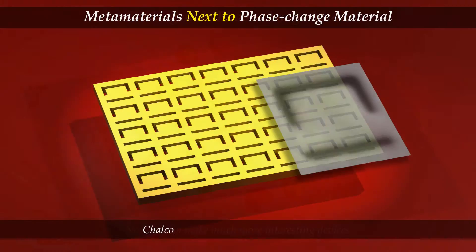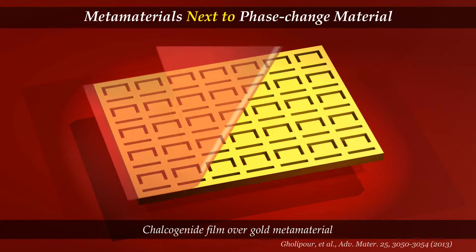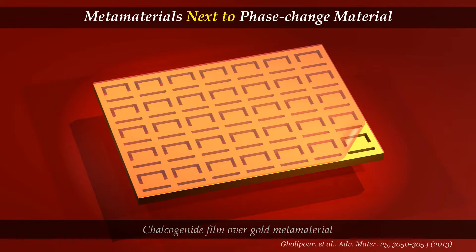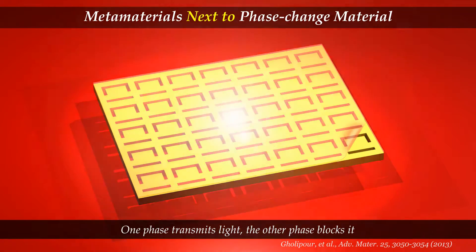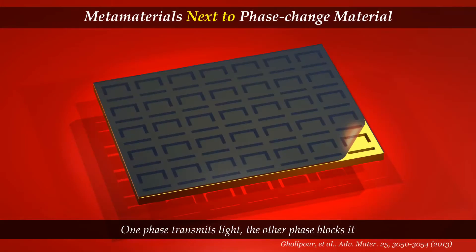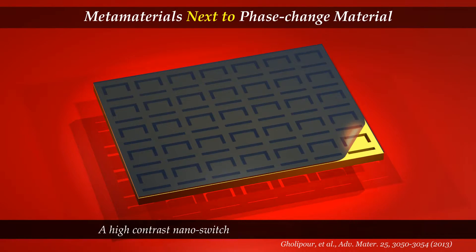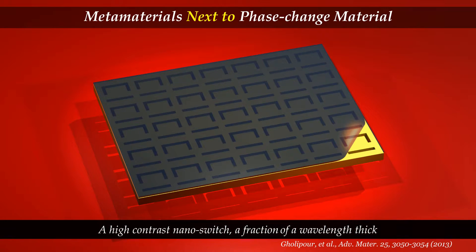The first example uses a gold metamaterial with a thin chalcogenide film placed on the top. If the chalcogenide is in one phase, the material transmits light; in the other phase, it blocks it. So what we have is a high contrast nano switch with electrical control in a layer a fraction of a wavelength thick.